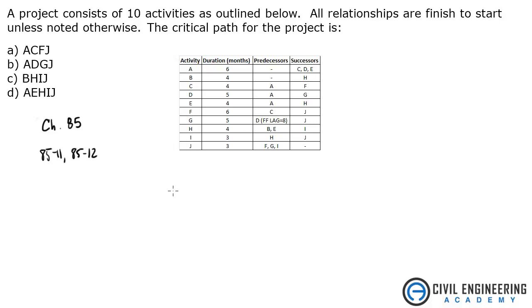So the first thing I'm going to do is change this to an activity on node network, just kind of makes more sense to me. So here's activity A. It has no predecessors. Activity B also has no predecessors. So I'm going to draw that in.